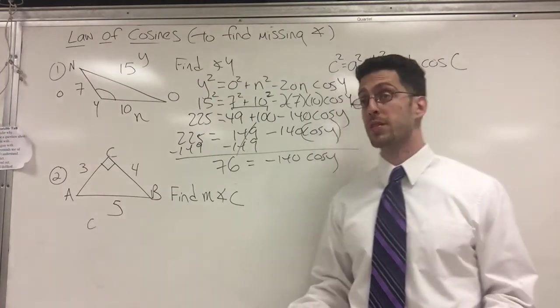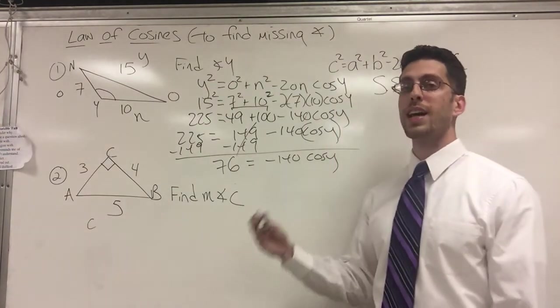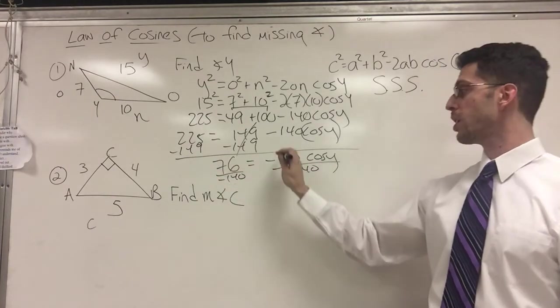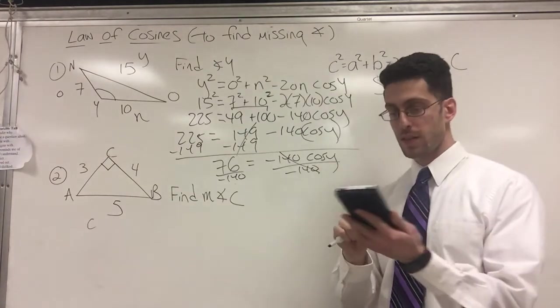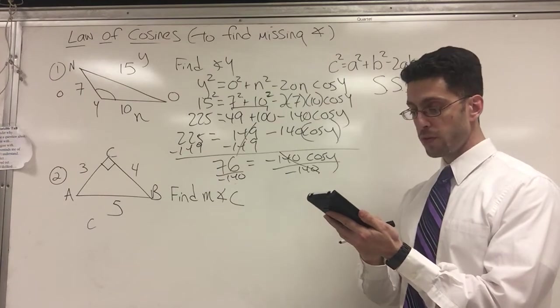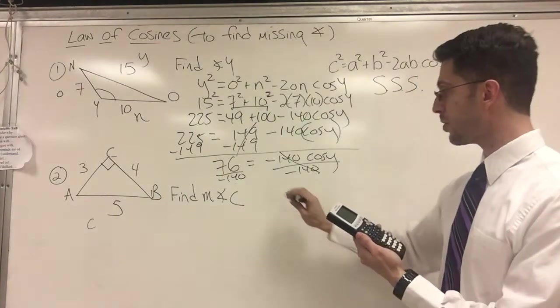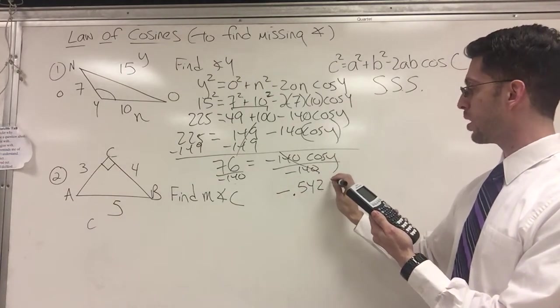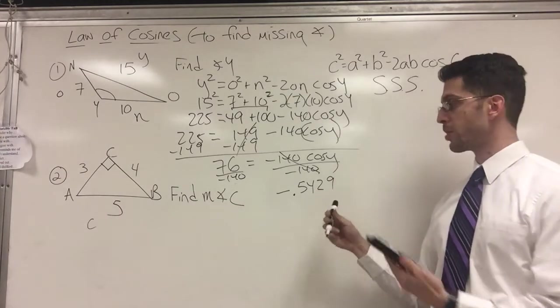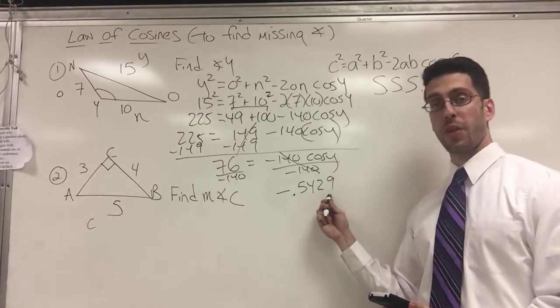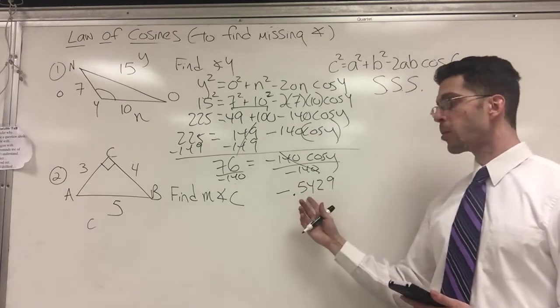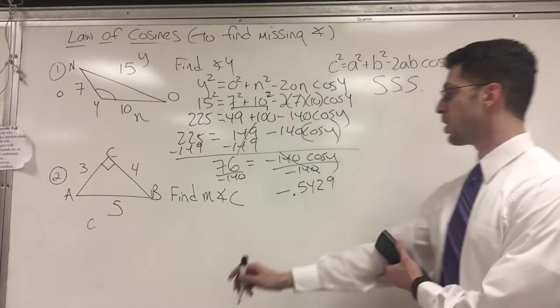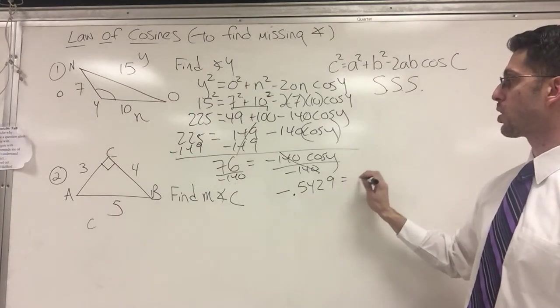76 equals negative 140 cosine Y. So is cosine Y alone? Not yet. I'm going to divide by the coefficient, divide by negative 140. They cancel. Now I definitely need this. 76 divided by negative 140 gives me negative 0.5429. Usually you shouldn't round to the very end, but I'm almost at the end. So just to be safe, I'm going to the four places.